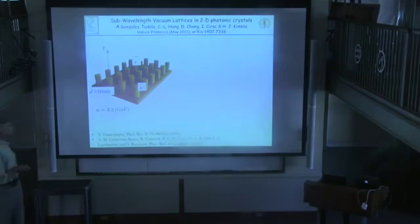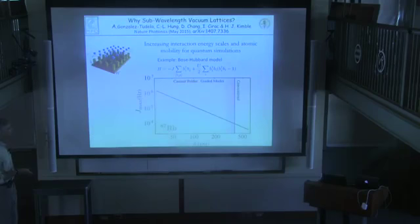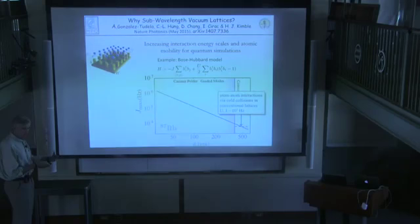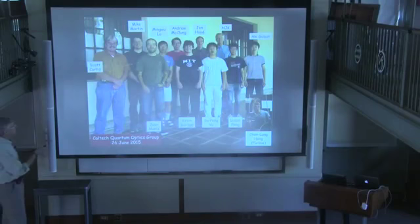Casimir-Polder forces are big here and small there above the posts of a photonic crystal, so you can use the modulation in Casimir-Polder to make traps on really small scales — so-called vacuum lattices where the length scale goes well below the wavelength. This would really push up the coupling rates compared to conventional optical lattices used for Bose-Hubbard physics. Let me thank the whole group. Thank you for your attention.